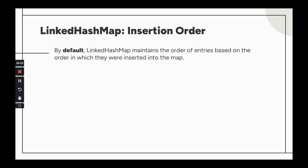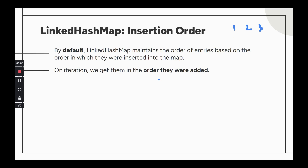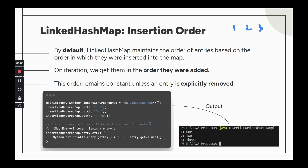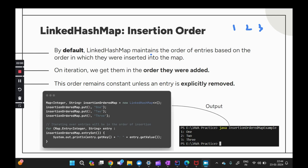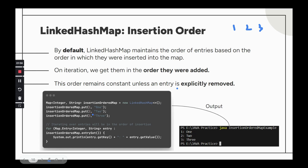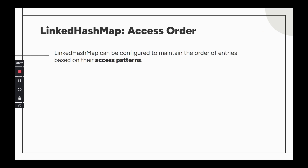LinkedHashMap maintains insertion order by default — the accessOrder flag is false by default. If you insert one, two, three, you always get one, two, three back. This order remains constant unless entries are removed. Looking at a code snippet: adding one, two, three and traversing the map prints one, two, three, maintaining the insertion order. This is the primary goal of using a linked list in LinkedHashMap.